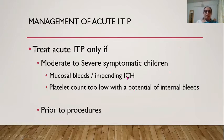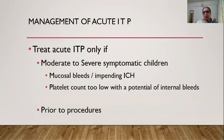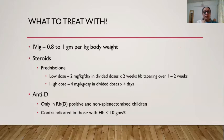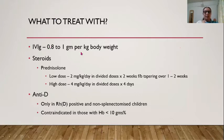Treat acute ITP only if there is moderate to severe symptomatic bleeding, mucosal bleeds, impending ICH, very low platelet count with risk of internal bleeds, or prior to procedures. IV immunoglobulins: the previous dose of 2g/kg total (divided over days) has been modified — current evidence supports a single dose of 0.8–1g/kg body weight on the same day as sufficient.